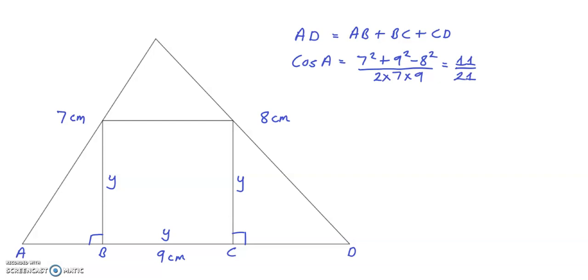From this fact, a right angle triangle can be sketched where this is angle A here. So the cosine, so the adjacent is 11, the hypotenuse is 21. If we use Pythagoras, the vertical height here is 8 root 5.